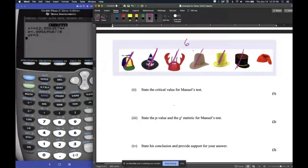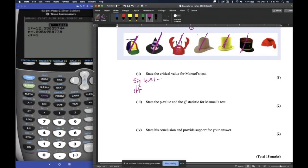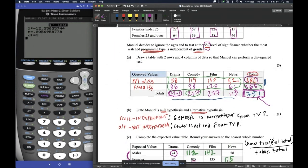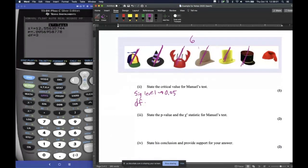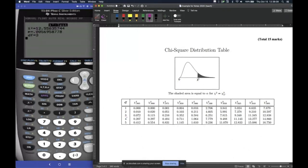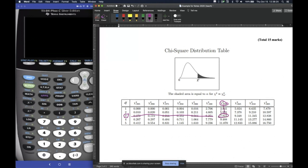Now, this part says state the critical value for Manuel's test. To do that, we need to know the significance level and we need to know the degrees of freedom. That's what we need. So our significance level, they gave that to us in the beginning. That was right here, 5%. Change that to a decimal. We have 0.05. Degrees of freedom was three. On our table, so they'll actually rarely ever make you do this. Usually, they give you the critical value, but just in case. So I see 0.05 right here and then degrees of freedom here. Where they line up, that's my critical level. So it'll be 7.815.